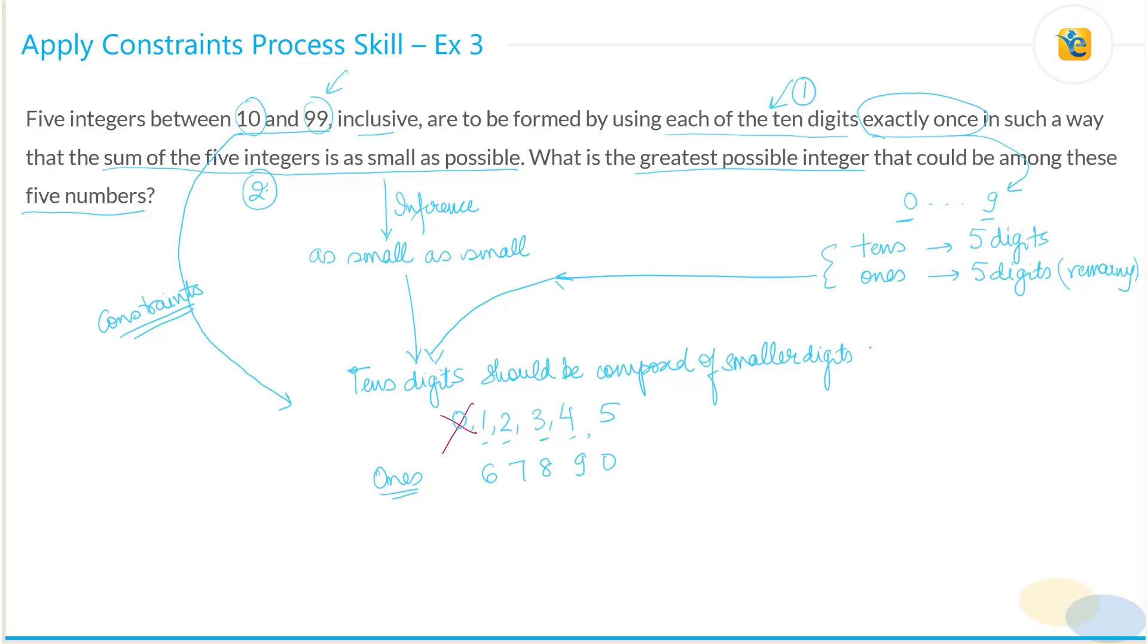So this is what we have inferred, which means that the greatest number possible is—you take five from here and nine from here. This is the greatest number possible, which means that the correct answer here is choice C, 59.